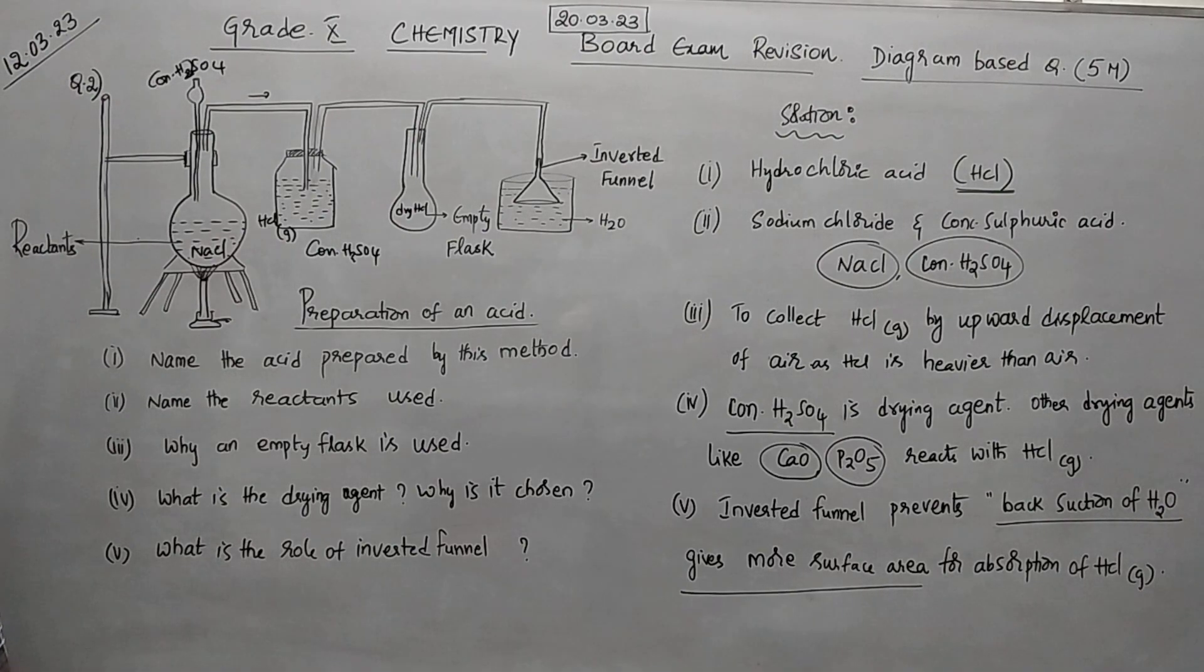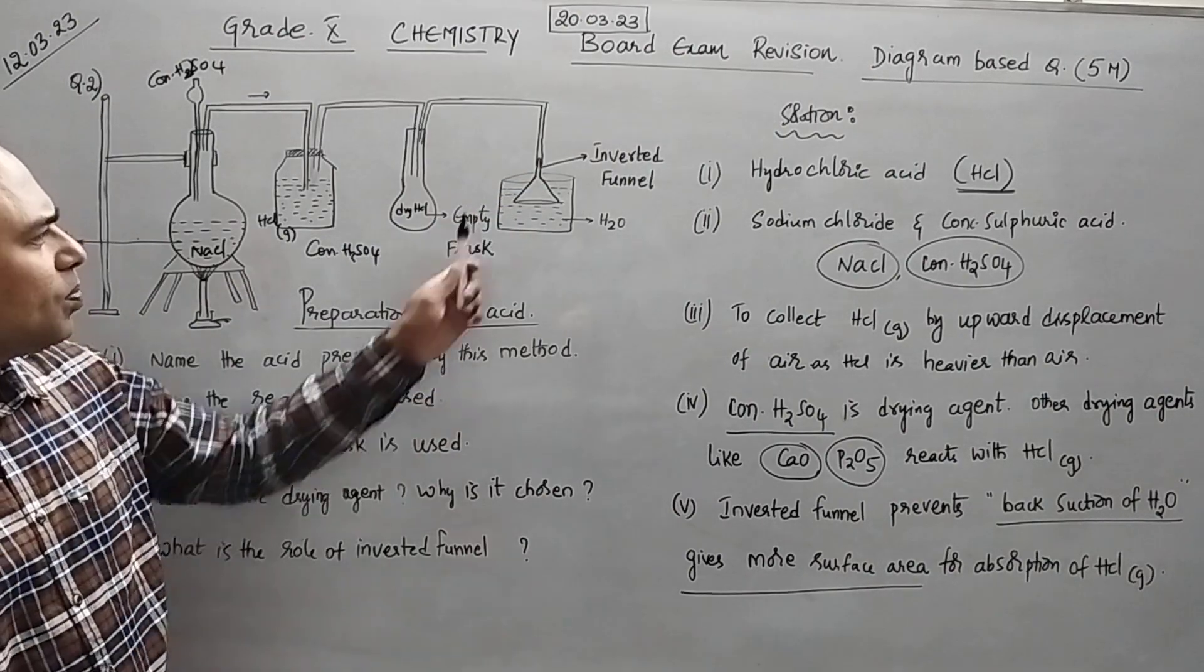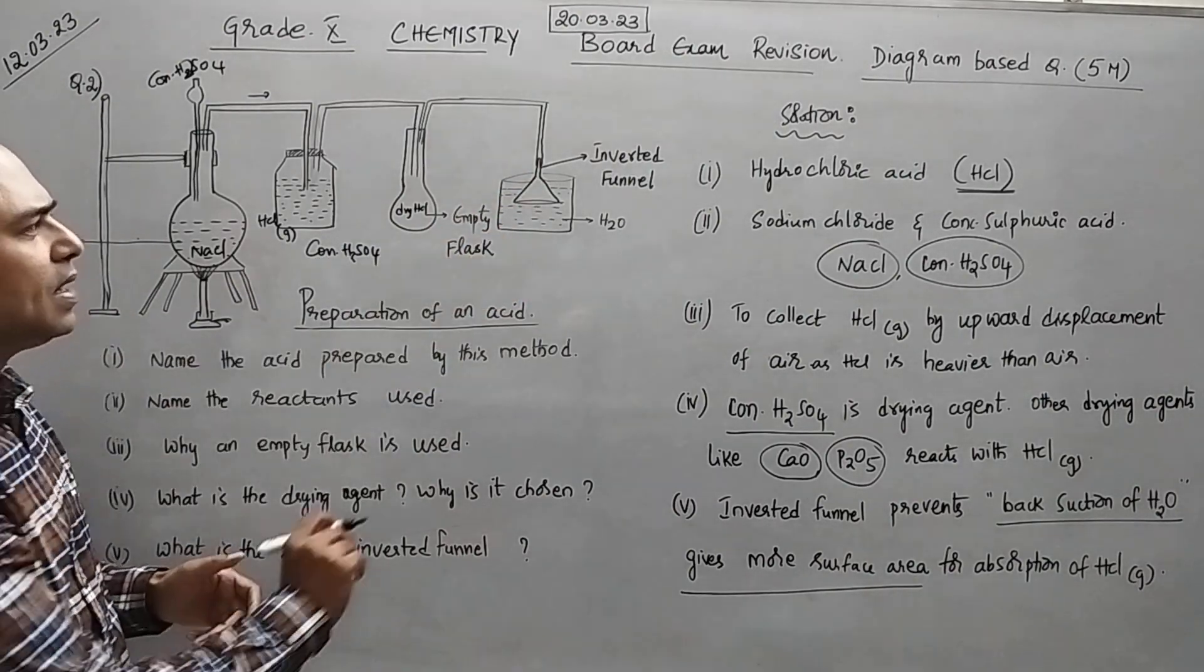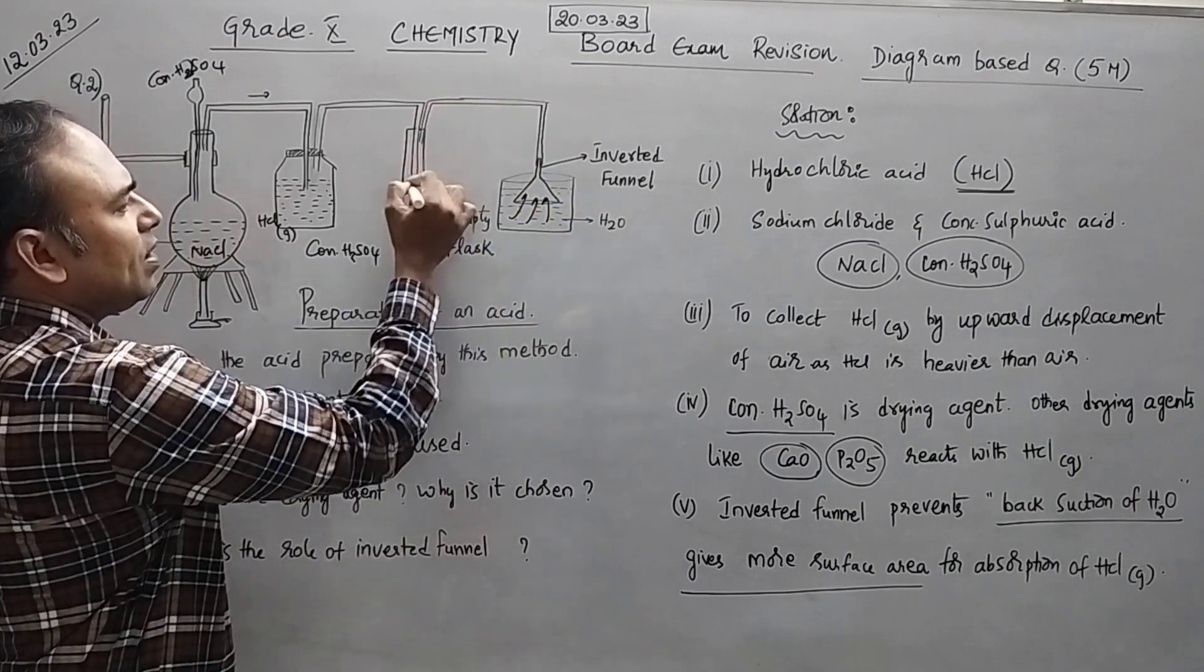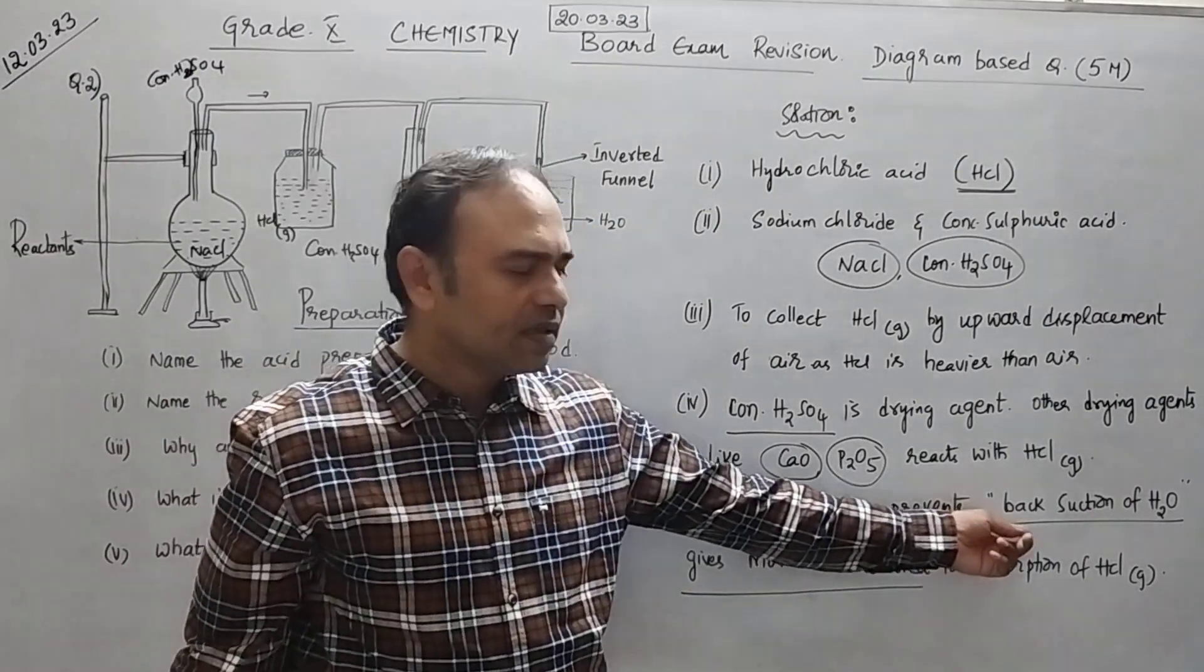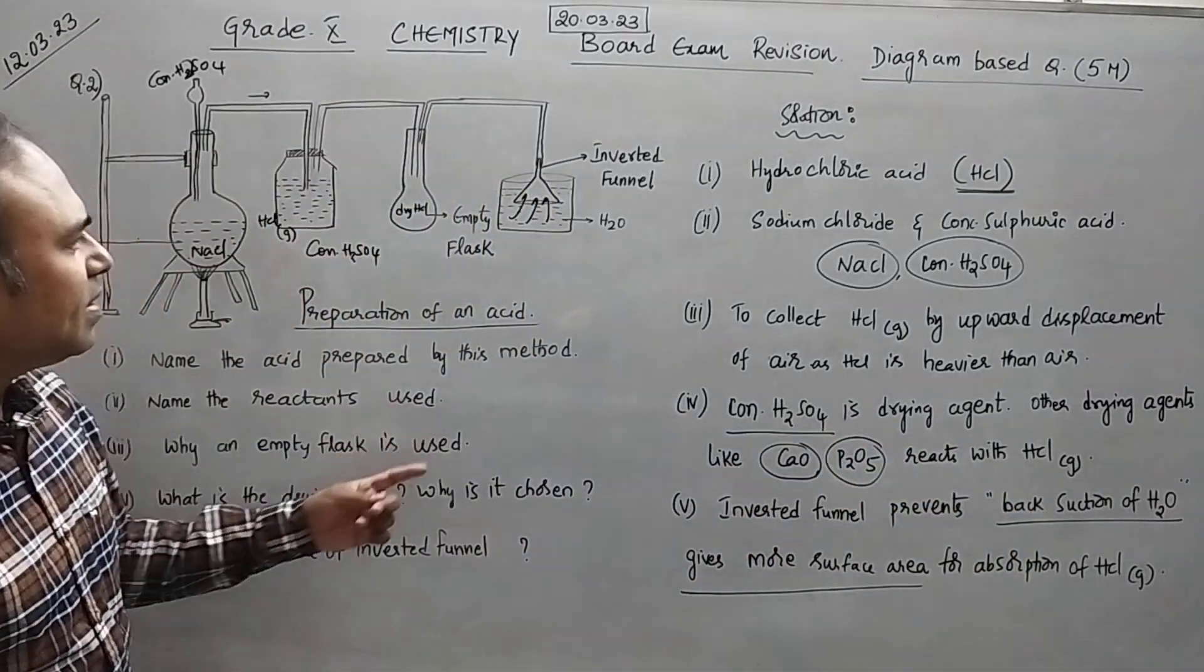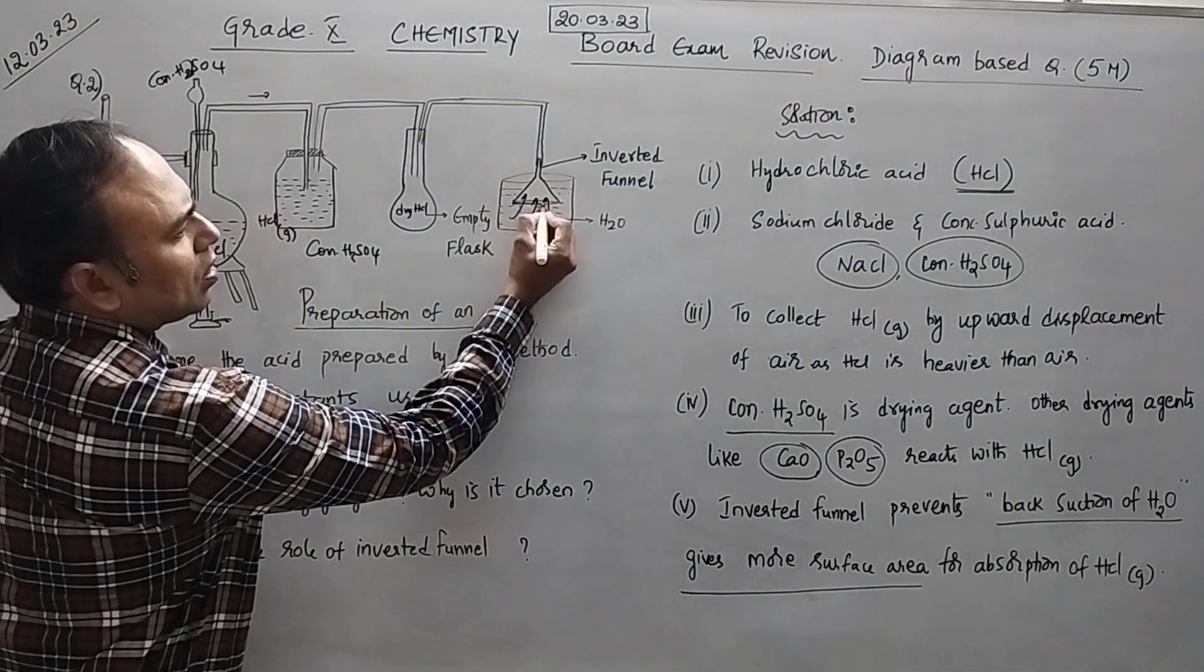Hope you have understood this. Next step. Fifth question. What is the role of this inverted funnel? Now if you place this inverted funnel what will happen? This water cannot go back into your empty flask. That means to prevent the back suction of water number one and second one is it will have more surface area here.